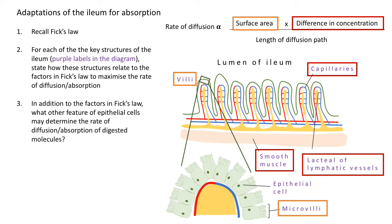You should also have identified smooth muscle. The reason for the smooth muscle is that it contracts and mixes the solution in the lumen of the ilium. By continually contracting and circulating the solution, it means there is a constant cycling of molecules close to the epithelial cells, maintaining that difference in concentration.